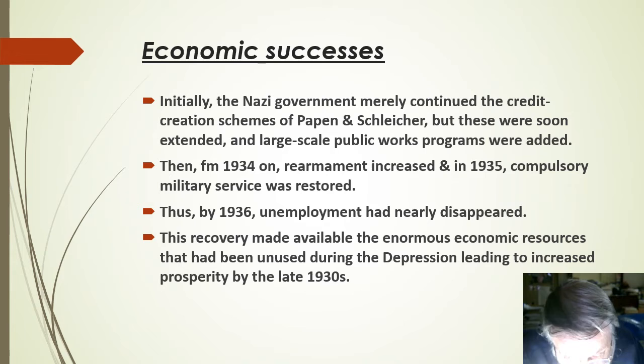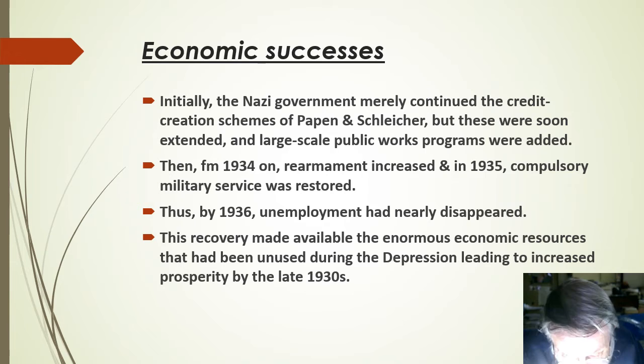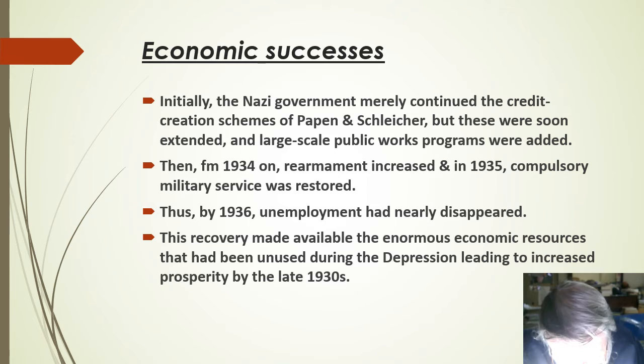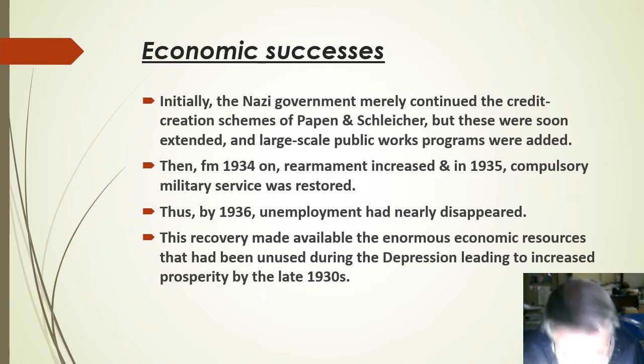By 1939 and the start of World War II, support for Hitler had increased further. Initially, the Nazi government merely continued the credit creation schemes of von Papen and von Schleicher, but these were soon extended and large-scale public works programmes were added. Then, from 1934 onwards, rearmament increased, and in 1935 compulsory military service was restored. Thus, by 1936 unemployment had nearly disappeared. This recovery made available the enormous economic resources that had been unused during the Depression, so that by the late 1930s the whole labour force prospered.